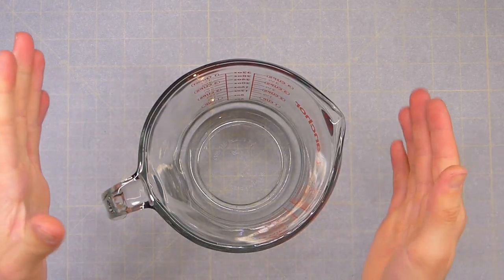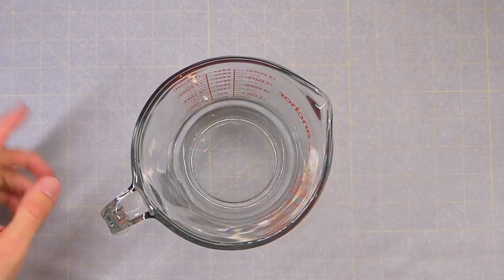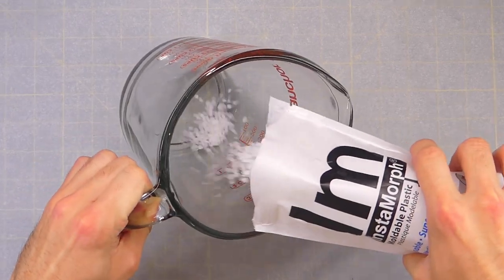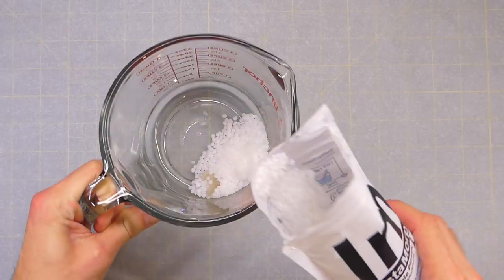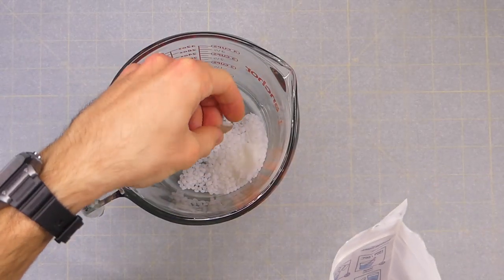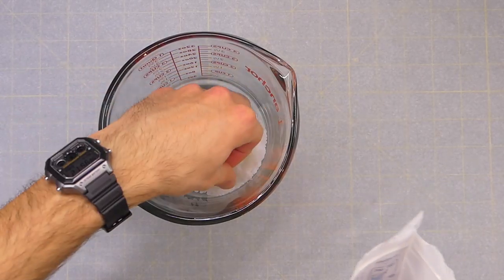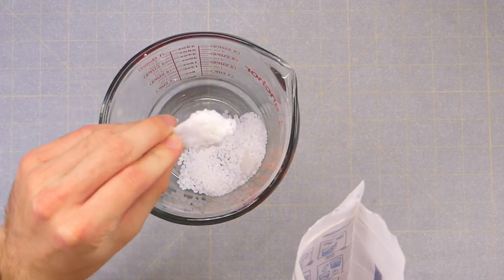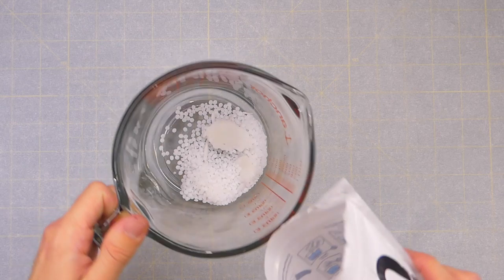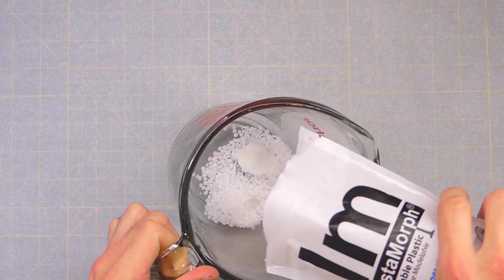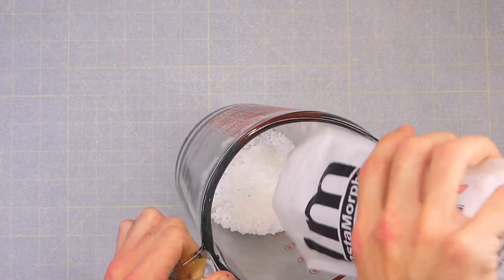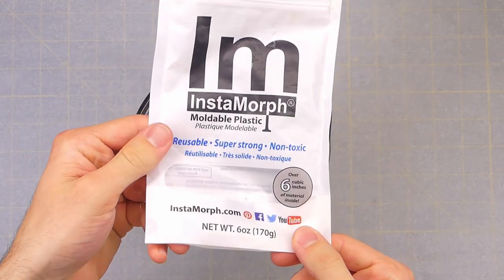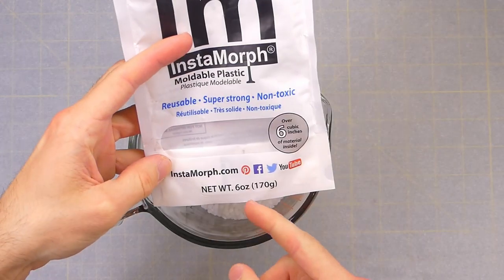First step is we're going to get our glass container and we need to heat up the hot water. Now we're gonna put in some InstaMorph. I have larger pieces, these were projects that didn't turn out so you can just melt them down and reuse them. I don't know how much we're gonna need so I'm just gonna put in all the rest of what I have. But I've made a bunch of stuff just using this one bag. It's like six ounces.